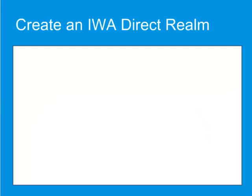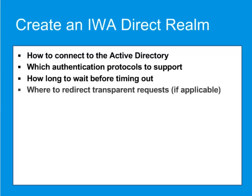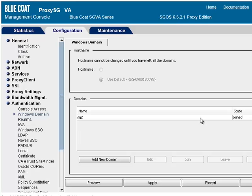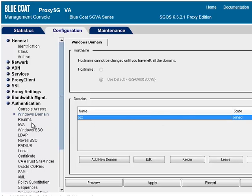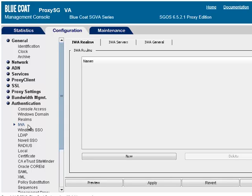The IWA Realm contains the configuration settings that the ProxySG needs to perform IWA authentication, including how to connect to the Active Directory, which authentication protocols to support, how long to wait before timing out, and where to redirect transparent requests if applicable. You can create the IWA Direct Realm as follows: first, select Configuration, Authentication, IWA, IWA Realms.